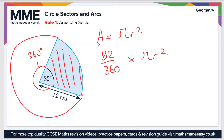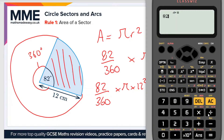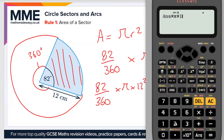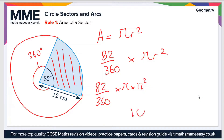If we multiply that fraction by the area of the full circle, that gives us the area of the sector. So: 82 divided by 360, times pi, times r squared — which is 12 squared. Plugging that into the calculator: 82 over 360 simplifies to 41 over 180, times pi, times 144, giving us a value of 103.04 centimeters squared.